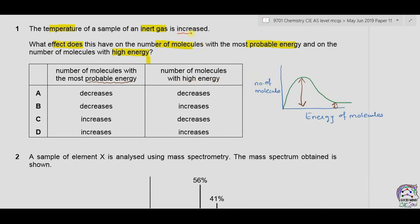When the temperature is increased, since the area under the curve is constant, the curve moves to the right. The number of molecules with the most probable energy decreases, while the number of molecules with high energy increases. So the first part shows decrease and the second part shows increase. The answer is B.